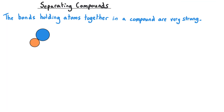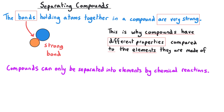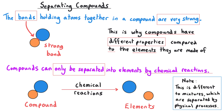The bonds that hold atoms together in a compound are very strong, and that influences the properties that different compounds can have. Another feature is that compounds can only be separated out into their component elements by chemical reactions — we can't use physical methods of separation. We have to use actual chemical reactions to break the bonds holding the elements together.